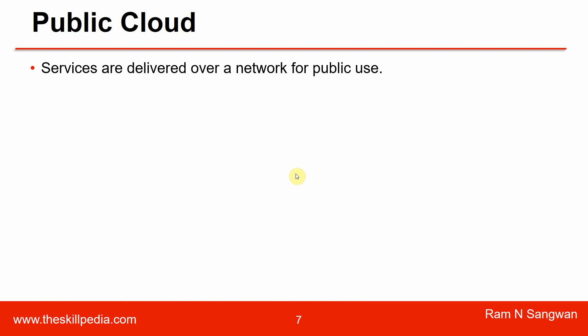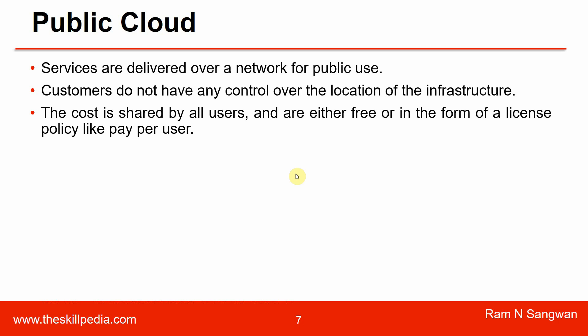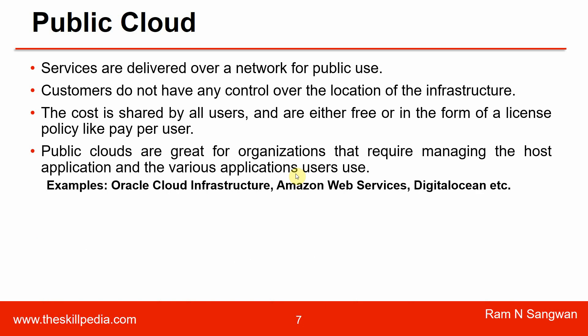Public cloud services are delivered over a network for public use — open, just like AWS, Oracle Cloud Infrastructure, Google Cloud, and Digital Ocean. Customers do not have control over the location of the infrastructure; it is the vendor who decides where the resources will be located, organized in different regions and availability domains. Customers decide where their resources will be located. The cost is shared by all users and is either free or in the form of a pay-per-user or pay-as-you-go license policy.